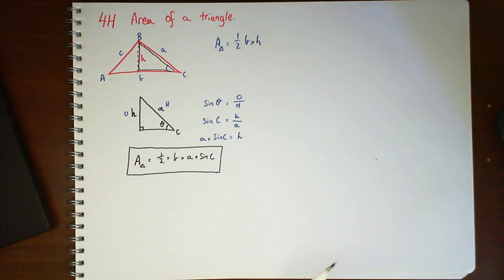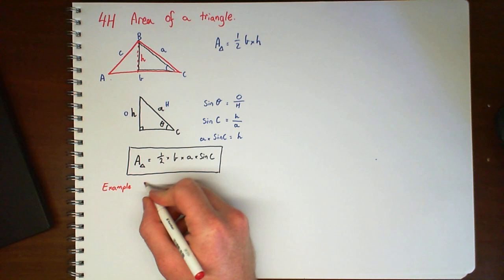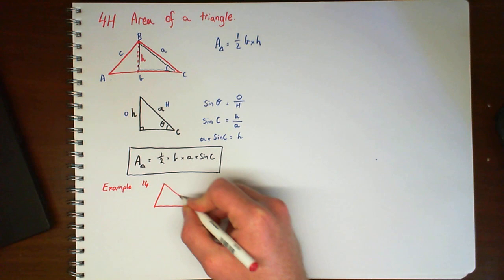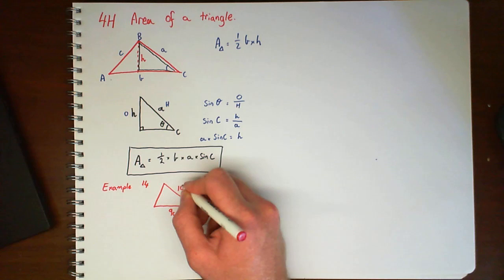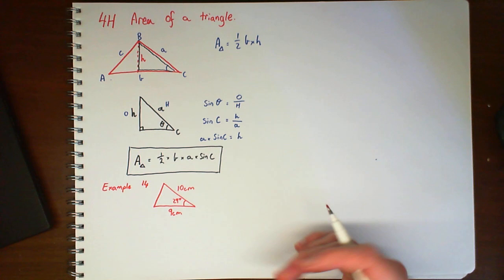So let's have a look at an example. So example 14. I've got a non-right angle triangle. We've got 9 for the base, we've got 10 over here, and our angle between it is 29 degrees.